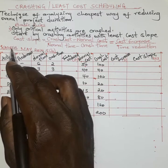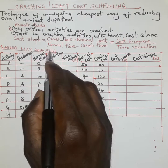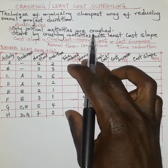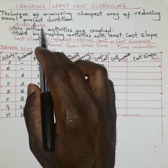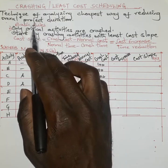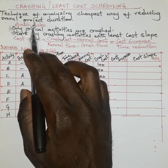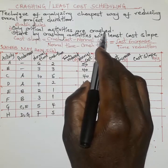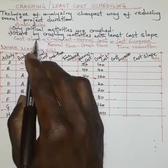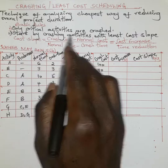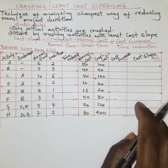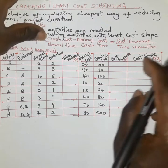Here we have an extract from a CASM past paper, May 2014, Question 5b. Before we examine this question, I want to recall two basic rules in crashing. Rule one: only critical activities are crashed. Rule two: you start by crashing activities with the least cost slope. This means we must first determine the cost slope.